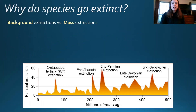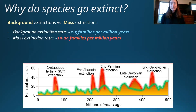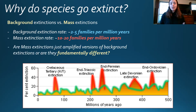Before we get to the mass extinctions, we need to talk about why species go extinct. Mass extinctions aren't the only kinds of extinctions — there are also what are called background extinctions. As shown on this slide, extinction rate is plotted against millions of years ago, with five big peaks representing the mass extinctions. However, extinction rate is still happening along the background. This background extinction rate is about two to five families per million years, rather than mass extinction rates of about ten to twenty families per million years. So the question is: are these huge peaks just amplified versions of background extinction, or are they fundamentally different?